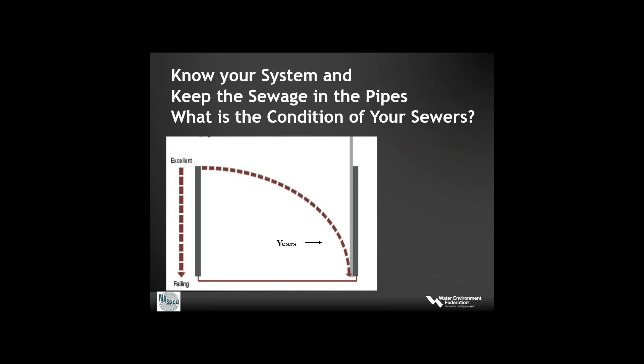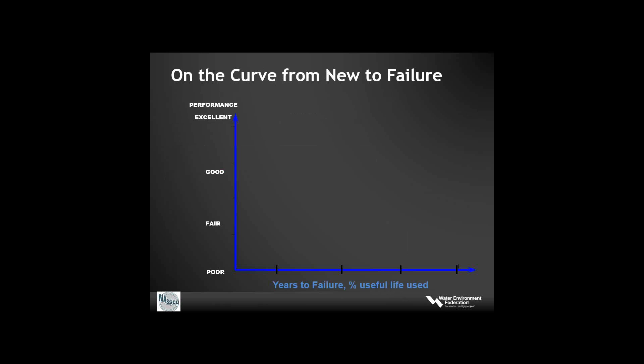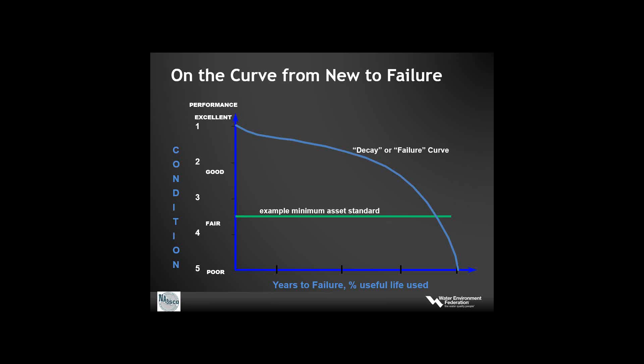Whether your sewers are 10 years old or 100, their condition will fall somewhere on a decay curve, and running to failure is not a good option. You want to know the condition of your pipes and manholes—your assets—and where you are on that failure curve will change over time. Condition grading with PACP, MACP, and LACP is going to tell you where you are. You want to use that to keep your assets at some minimum standard, use the assessment to track the condition, bring those assets up to standard, and determine when you need renewal.